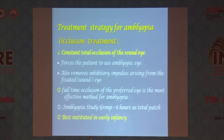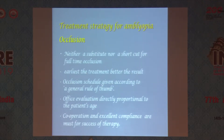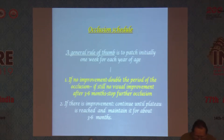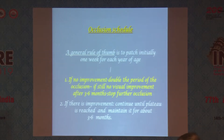Constant occlusion of the sound eye forces the patient to use the amblyopic eye and also removes the inhibitory impulses arising from fixation of the sound eye. The general rule of thumb for occlusion is according to age: one week for each year of age initially. If there is no improvement, you can double this period, and if there is still no improvement, consider stopping the treatment.